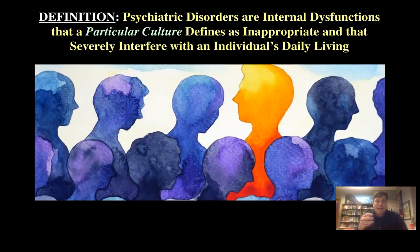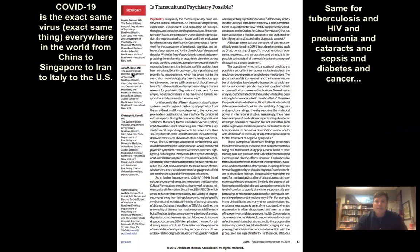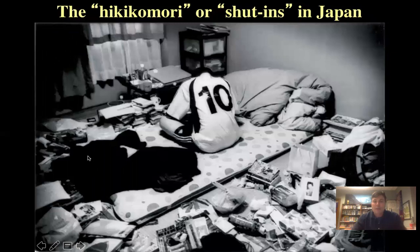The technical definition: psychiatric disorders are internal dysfunctions — meaning we can't objectively confirm them with a blood test, urine test, or radiological test. They're defined as internal dysfunctions that a particular culture defines as inappropriate and that severely interfere with an individual's living. There's a cultural component. Contrast that with COVID-19, tuberculosis, HIV, diabetes, or cancer — the vast majority of diagnoses have the same cause, same symptoms, same treatment everywhere in the world. In mental health, you can get something different.